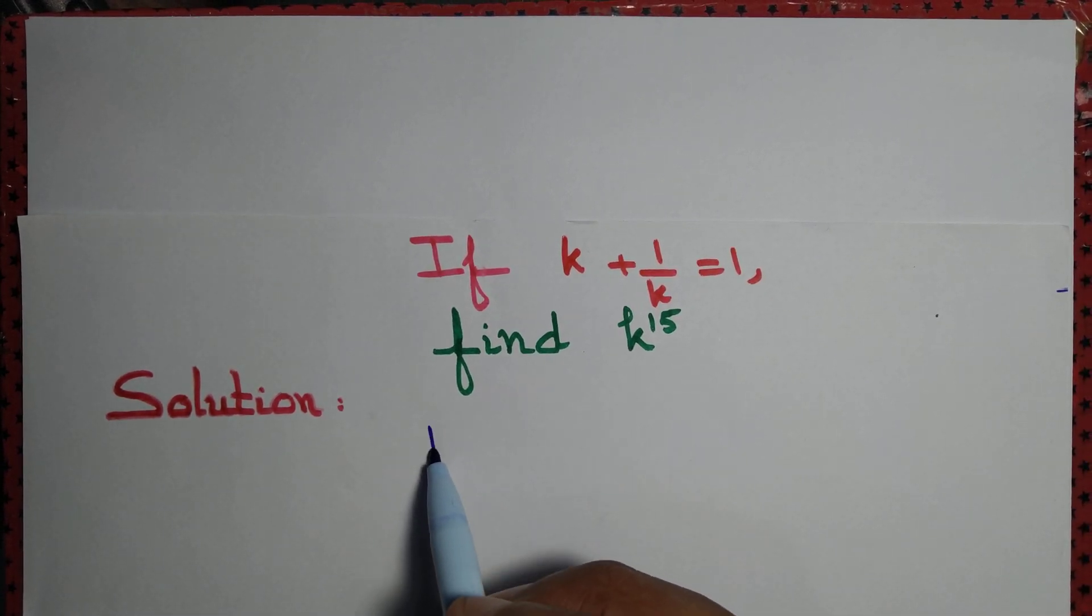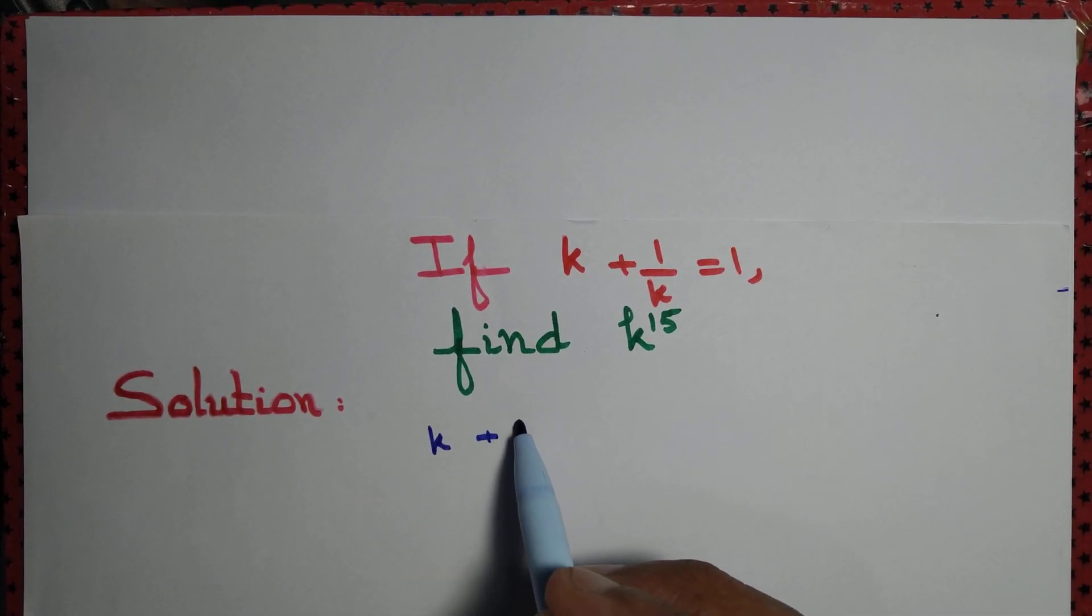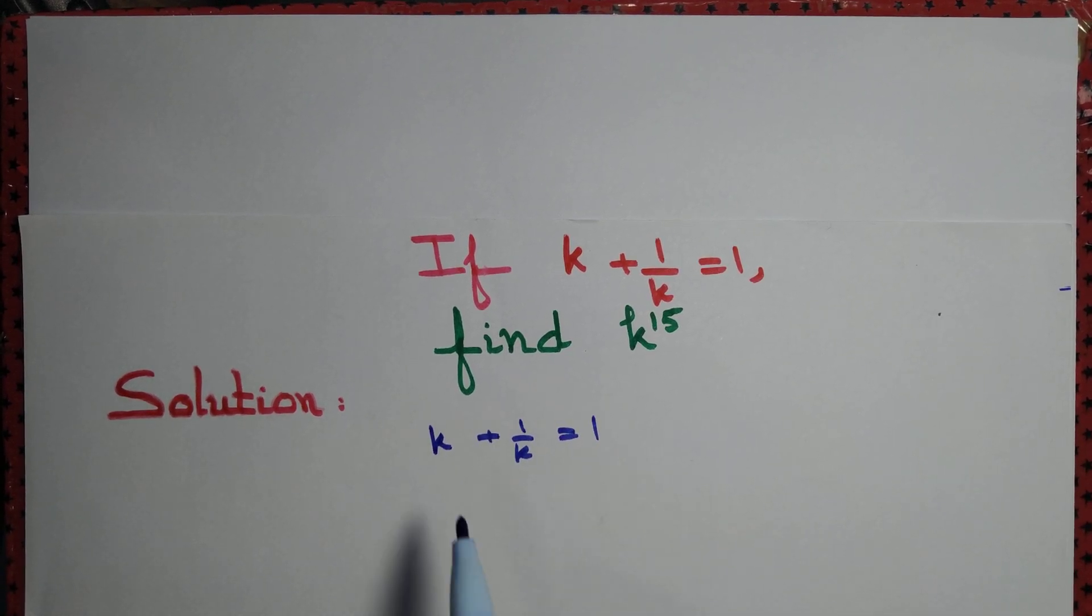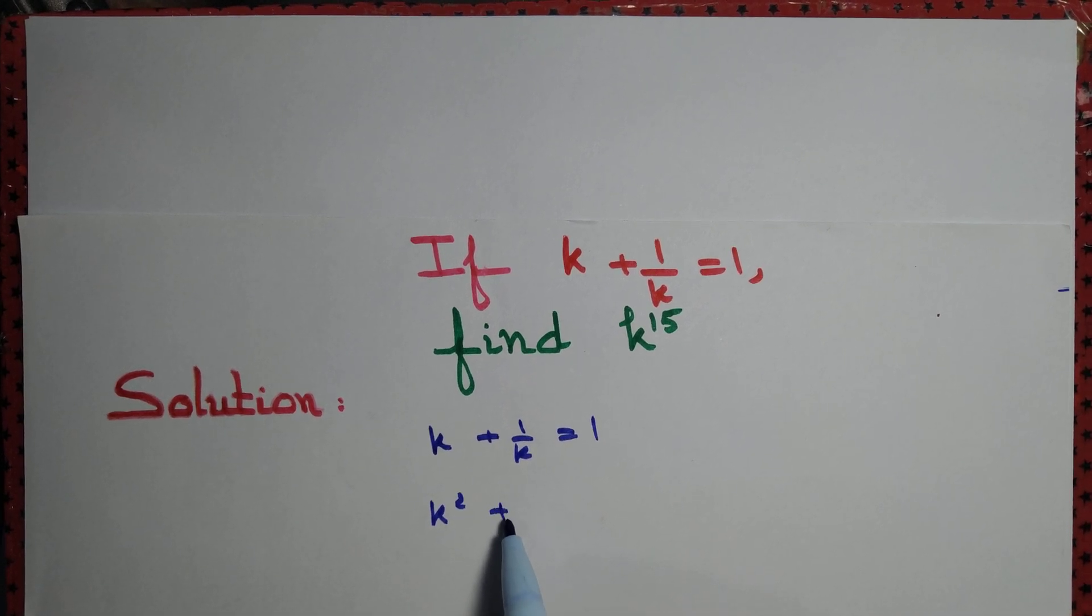We write the equation that is given to us once again. k plus 1 by k equal to 1. Now let's multiply by k throughout to obtain k² plus 1 equal to k. That is k² equal to k minus 1.